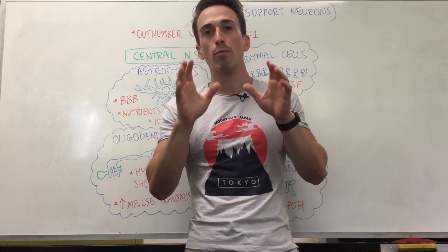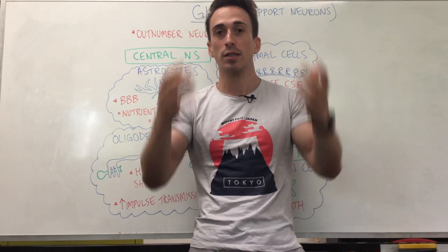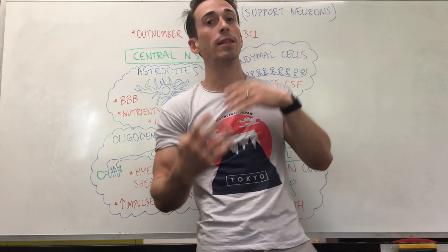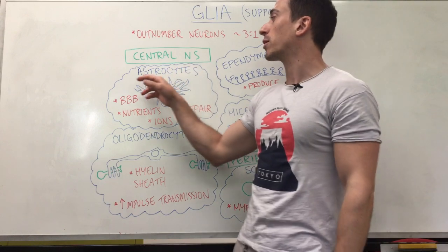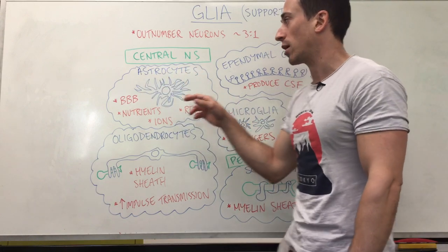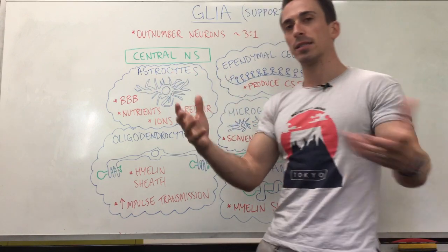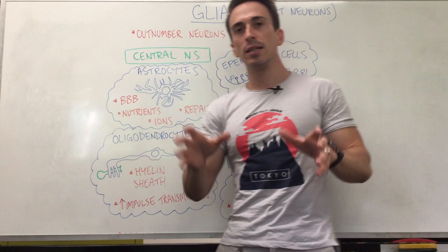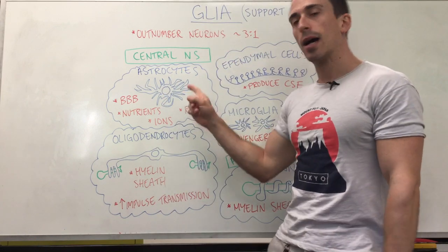Now when we break the nervous system up into the central nervous system — brain and spinal cord — there are four different types of glia that you should know. The first type is called astrocytes. Remember the suffix -cyte means cell, and astro means star, so these types of glia look like stars.